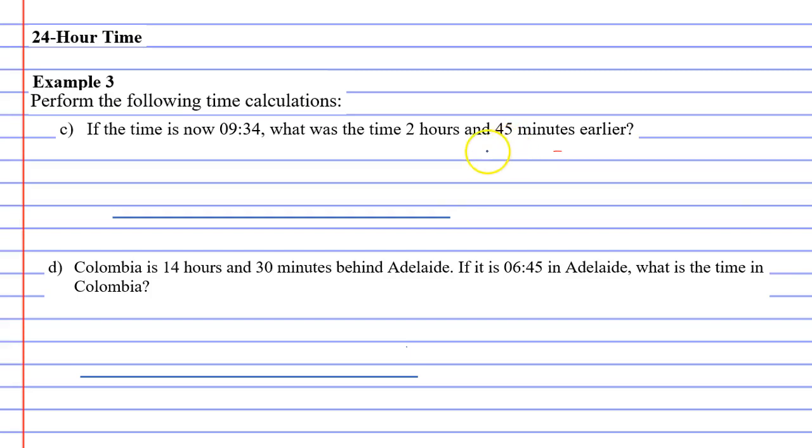Now because we're going to an earlier time, we're going to put the 9.34 on our timeline near the end of it. That's in 24 hour time, so that's really 9.34 a.m. or 9.34 hours. The first thing we'll do is we're taking the time off, we're going backwards, and we'll start by taking the 2 hours off.